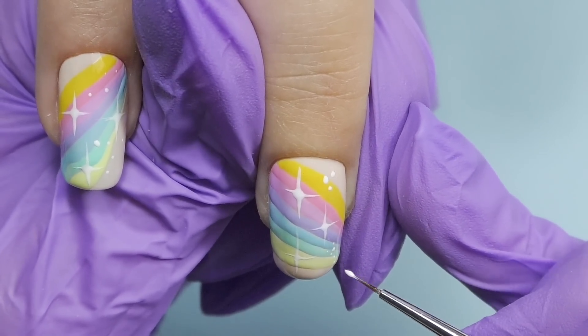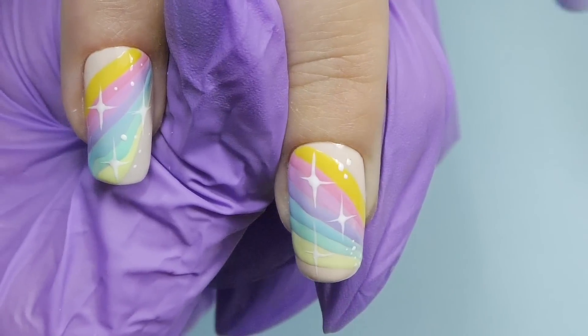Since Saviland gel polishes has very good coverage, you do not need to use a lot of product to add the color, even for the rainbow. As you can see, we did not really add too much volume.